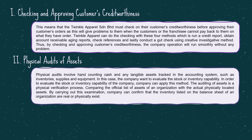Secondly, physical audits of assets. Physical auditing involves hand-counting cash and any tangible assets. In this case, the company wants to evaluate their inventory capability. The auditing of assets is a physical verification process where the company compares the official list of assets with the actual physically located assets. By carrying out this examination, the company can confirm that the inventory listed on the balance sheet physically exists.